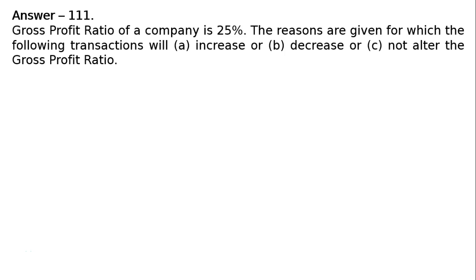This is question 111. Gross profit ratio of a company is 25%. State, giving reason, which of the following transactions will increase, decrease, or not alter the gross profit ratio.